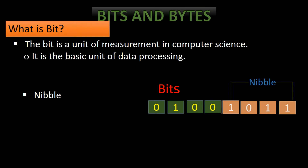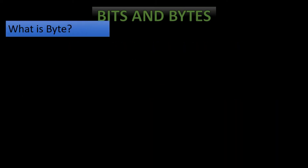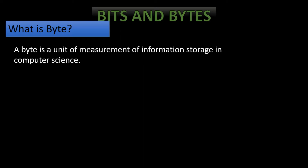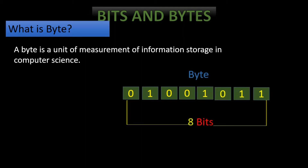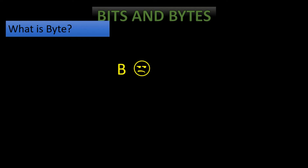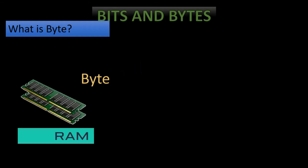Now let us know about byte. What is a byte? A byte is a unit of measurement of information storage in computer science. A byte is a group of 8 bits — that is, 8 zeros or ones. Any character is normally represented by bytes, and also byte is a unit for counting memory size.